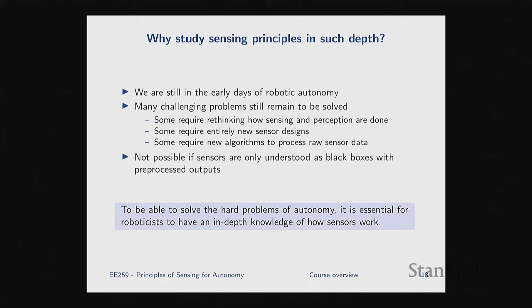Why study sensors in such detail? Why start from physics principles? Why not just treat a camera as a black box that gives pictures, or a lidar as something that gives a point cloud? The answer goes back to the fact that we're still in the very early days of autonomy. Like any technology in its early days — personal computers or the internet — there's no reference system design yet, no clear abstraction layers.